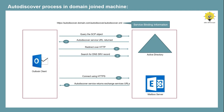From the SRV record, the Autodiscover query will be redirected to the mailbox server and Outlook client will get the XML file required to configure the Outlook profile. And in case the SRV record is also not configured, then the Autodiscover query will fail and the user will not be able to configure his profile in Outlook client.